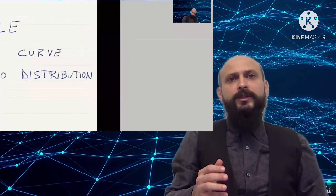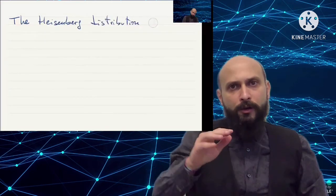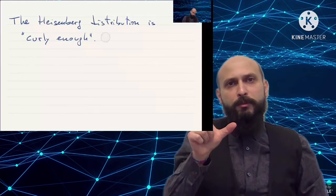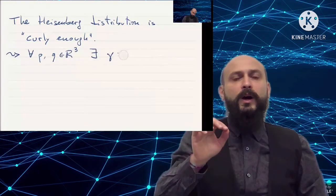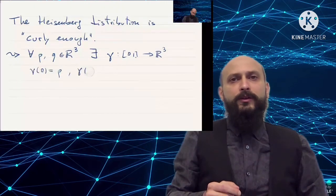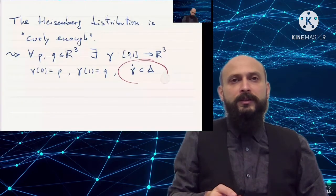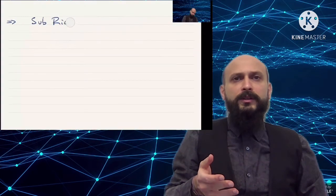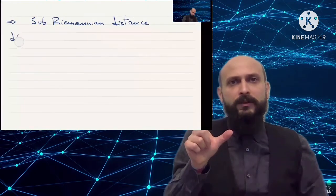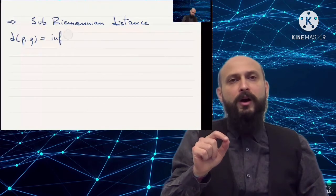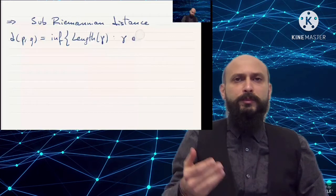The curves that will be called admissible are those curves that are tangent to such a distribution. The great feature of the Heisenberg group is that its distribution is curvy enough so that each pair of points can be connected by at least one admissible curve. From this fact, one can define a finite-valued distance, similarly to the Riemannian case.